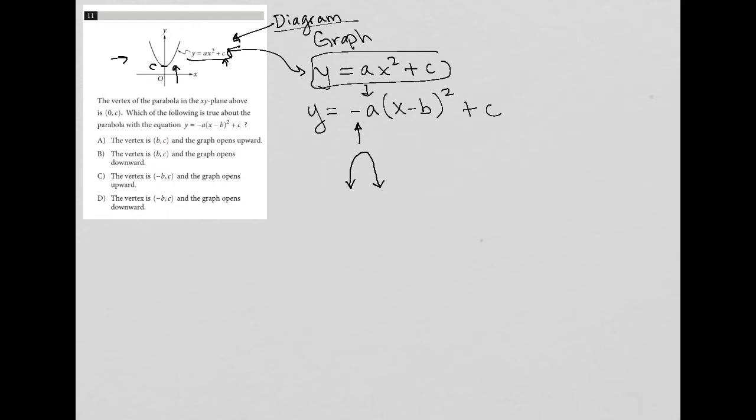So let's look at the answer choices. Choice A: the vertex is (B, C) and the graph opens upward. No, the graph would not open upward. The negative A there definitely makes it open downward. So A is gone and C is gone because C also says that the graph opens upward. So based upon just the negative A, we know that any answer that says opens downward is a possibility.